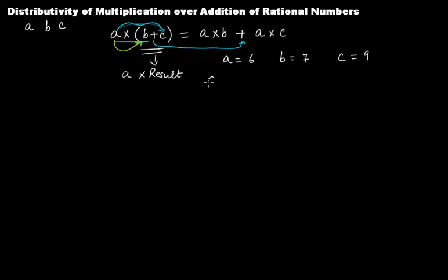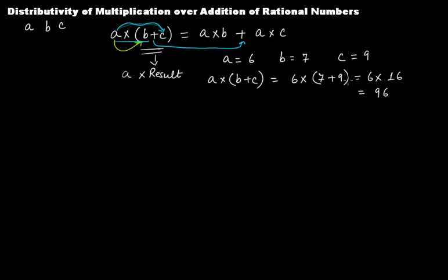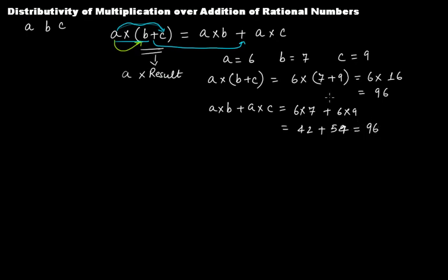From the left side: a times (b plus c) gives 6 times (7 plus 9), which is 6 times 16, and that gives you 96. Now performing a times b plus a times c: that is 6 times 7 plus 6 times 9, which is 42 plus 54. Adding those, you get 96. Clearly, we are getting the same result.